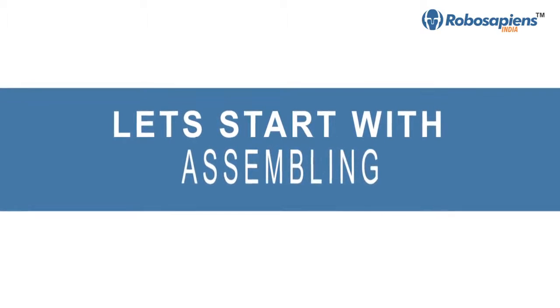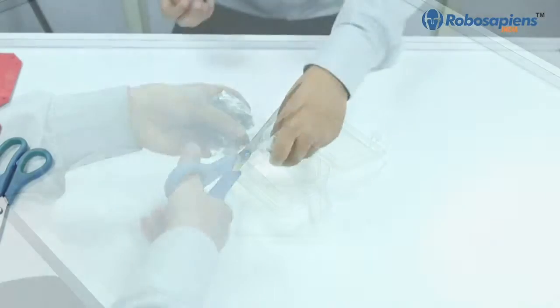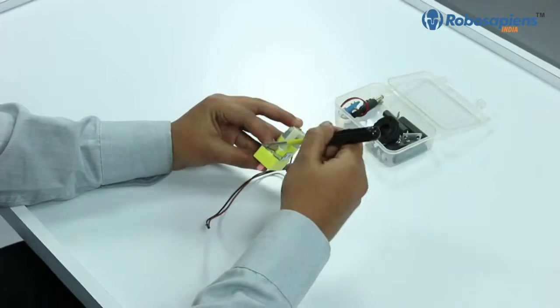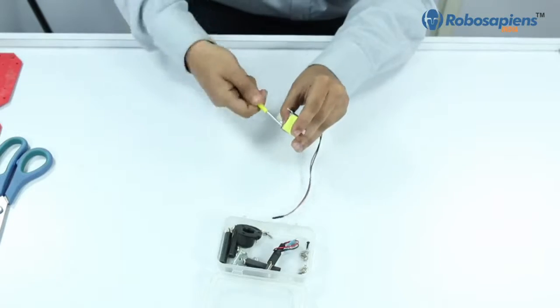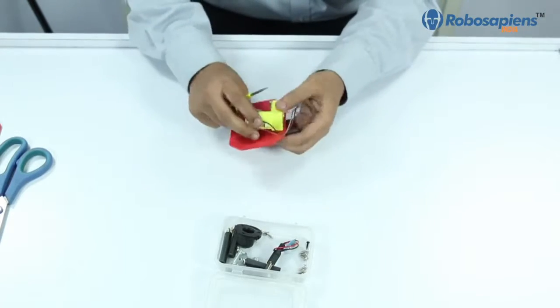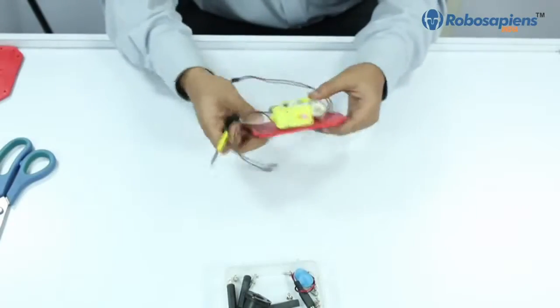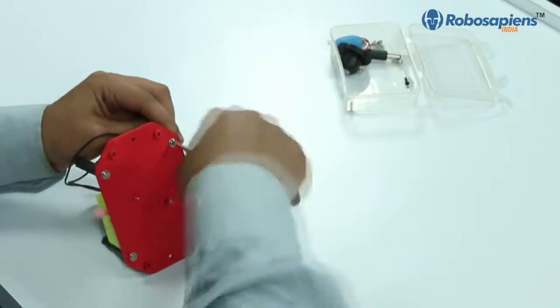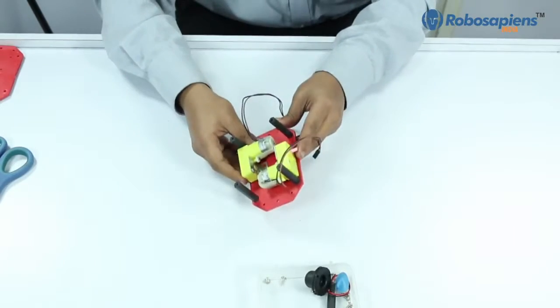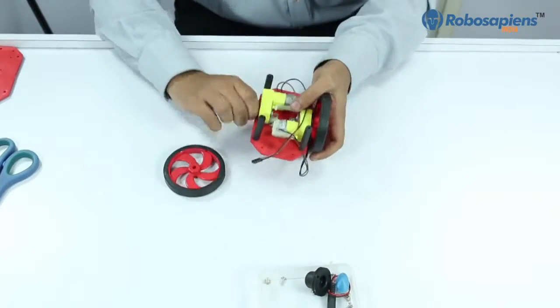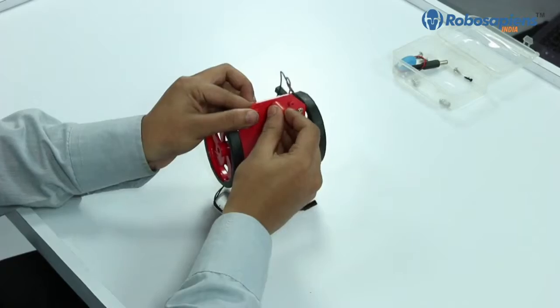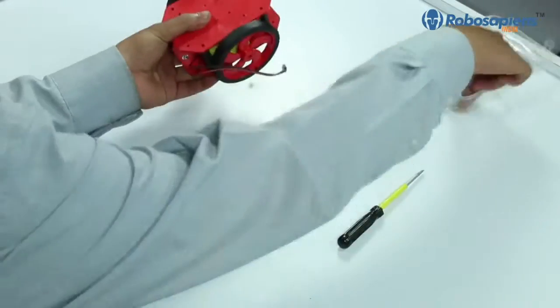Now let's start with the assembly process of our Arduino kit. Firstly, open the nut pole packet and keep it aside. Now connect the L clamps and the motors, then attach them on the chassis with the help of screws. Connect all four studs on the chassis and then both the wheels and the motors together. Attach the caster bullet. Now add the second chassis on the studs.